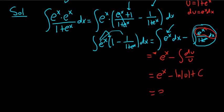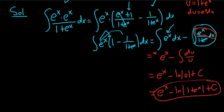And so this is equal to e to the x minus ln, and then u is 1 plus e to the x. 1 plus e to the x plus c. Did that kind of quick, but hopefully that made some sense.